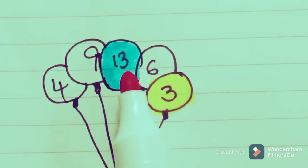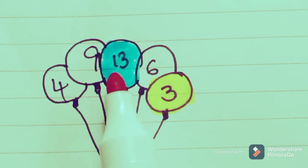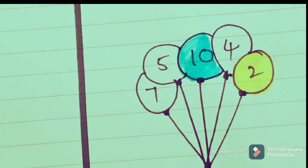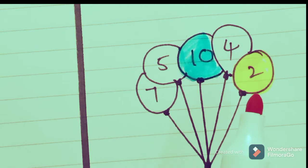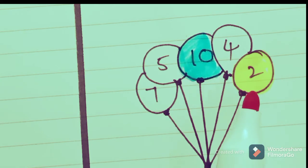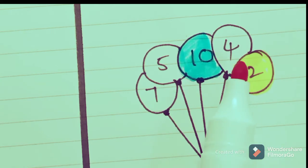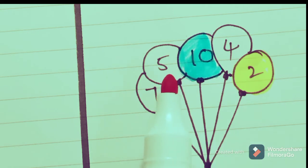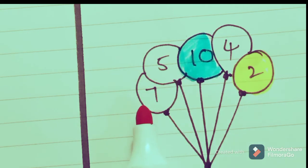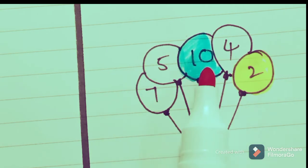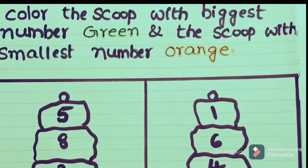The number which comes earlier is 2. In the number table, 2 is the first number, so it is the smallest number. After 2, 4 comes; after 4, 5 comes; after 5, 7 comes; and at last 10 comes. So 10 is the greatest number or the biggest number — we should color it in blue.